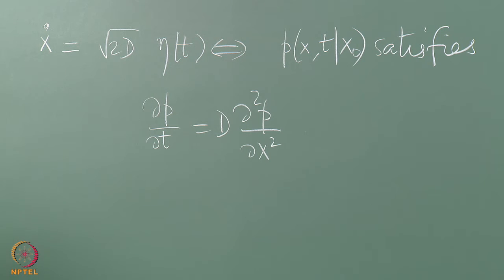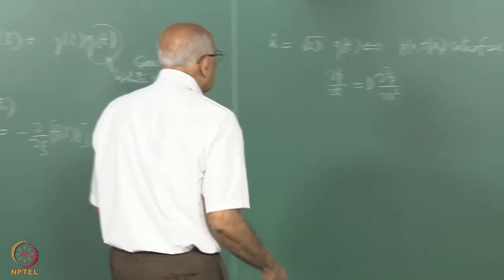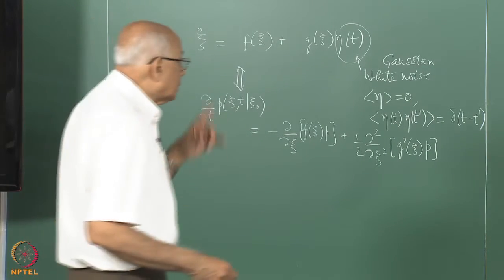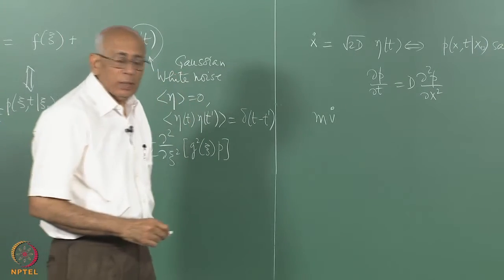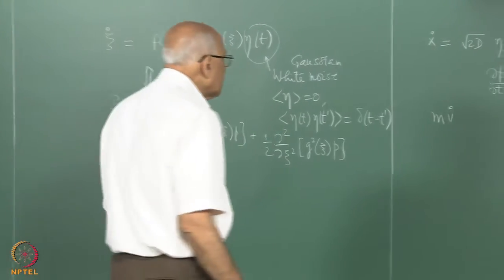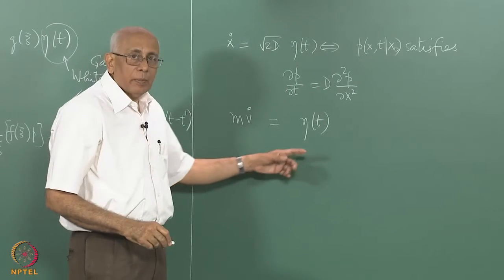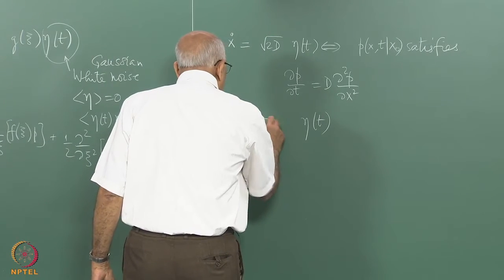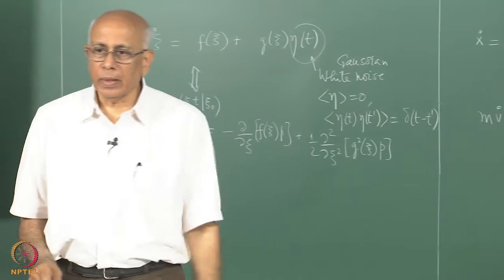Now let's be a little more detailed. Whatever force the particle is subject to will cause an acceleration. Writing the velocity as v, we should say m*v-dot equals whatever force it is subject to. In the simplest instance this force is completely random — due to molecular collisions — so we write it as sqrt(gamma) times eta(t), where gamma is some constant whose value we may determine by self-consistency.